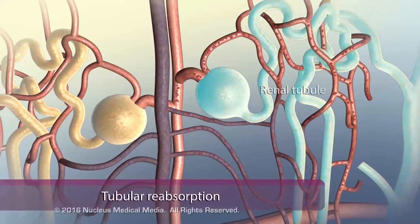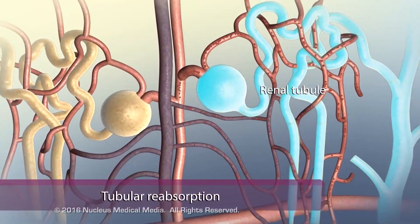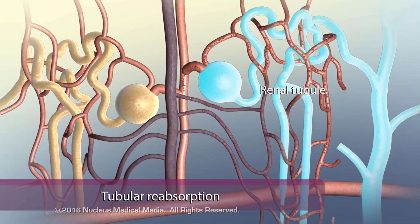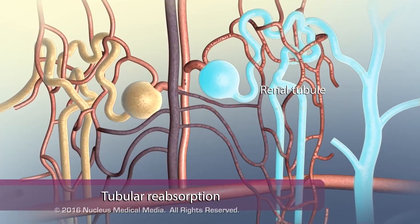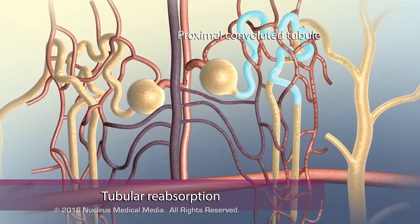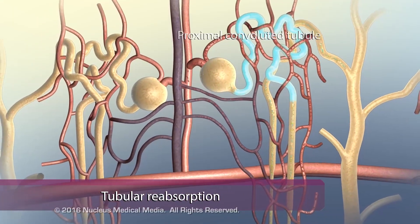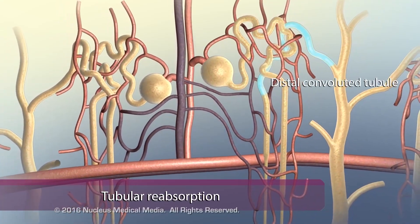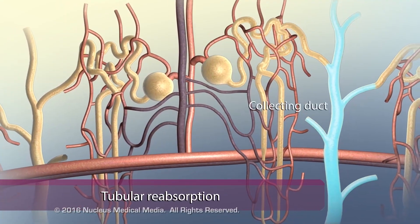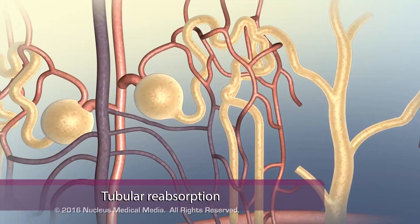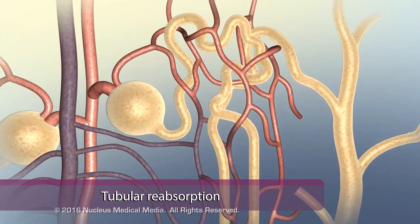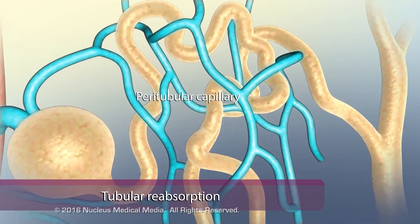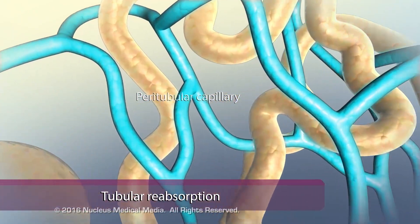During the second step of urine production, called tubular reabsorption, the fluid passes through the renal tubule, which consists of the proximal convoluted tubule, loop of Henle, distal convoluted tubule, and collecting duct. As the fluid passes through the renal tubule, it reabsorbs useful substances into the peritubular capillaries.